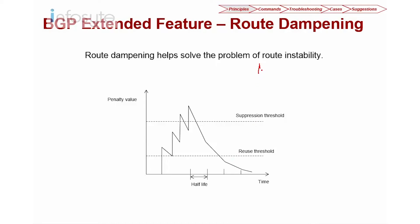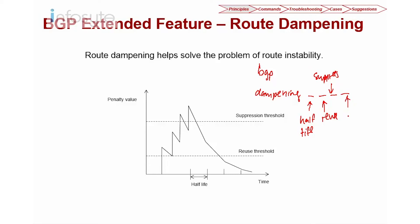Configuring route dampening is straightforward. Under the BGP process, use the command 'dampening' followed by: the half-life time, then the reuse value, then the suppress value, and finally the ceiling value. Whenever you have a large network where stability is very important, it is recommended to configure route dampening.